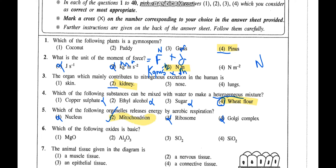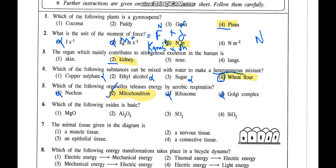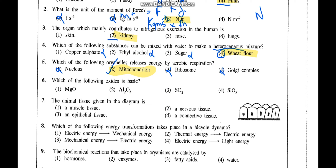Question 6: Which of the following is basic? Metallic oxides are basic; non-metallic oxides are acidic. Magnesium oxide — magnesium is a metal, so it is correct. Aluminium oxide is special — it is amphoteric, meaning it has both acidic and basic properties, so it won't come. Sulphur and silicon are non-metals, so their oxides are acidic. The answer is magnesium oxide.